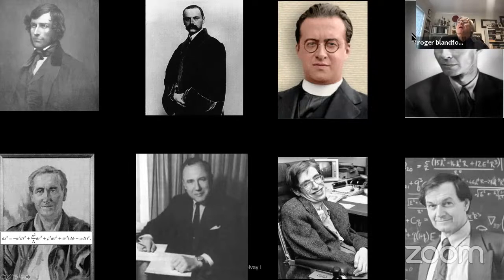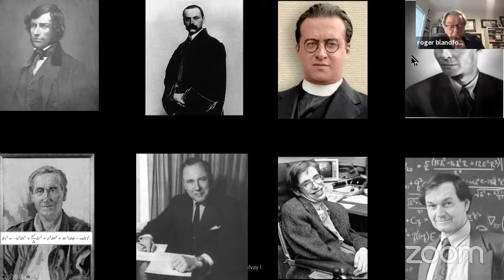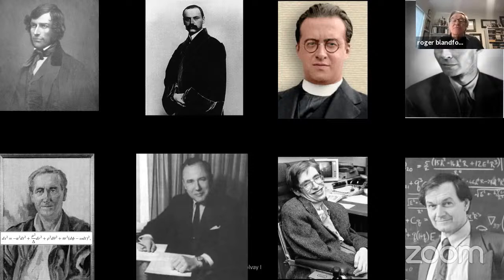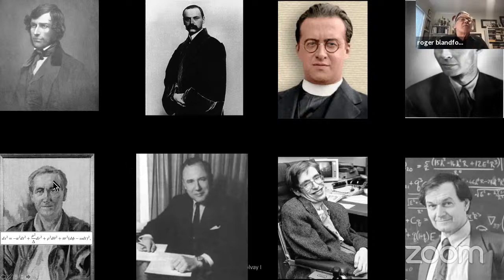Robert Oppenheimer thought about how a black hole might form through gravitational collapse. He and his student Snyder actually understood the kinematics of this rather well, although again it was underappreciated what they'd done until much later.